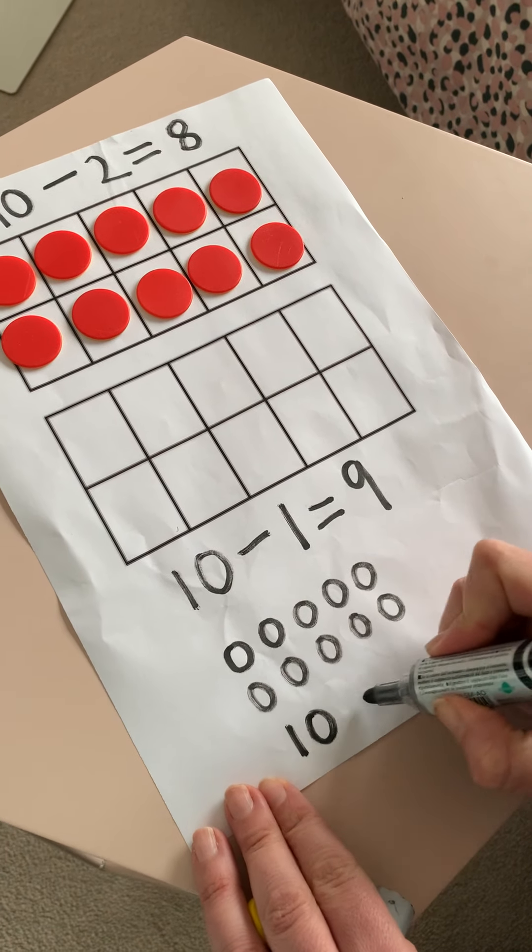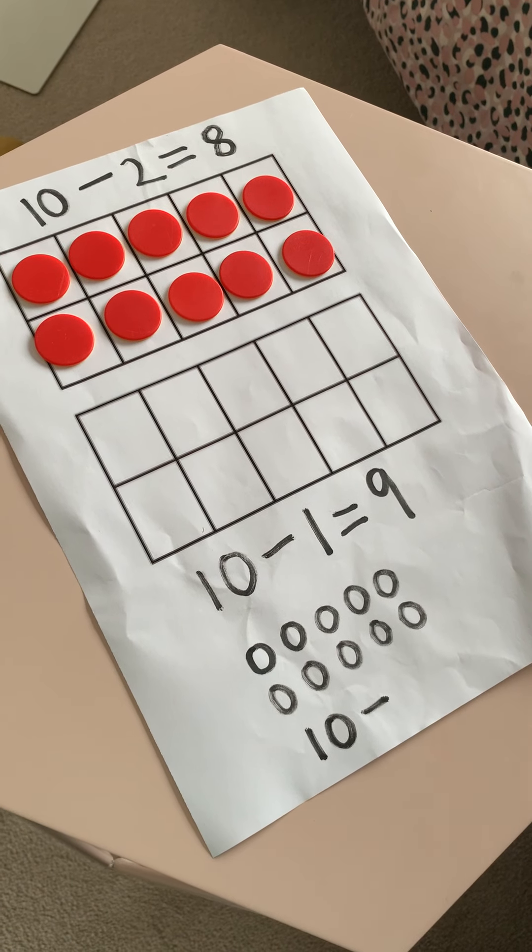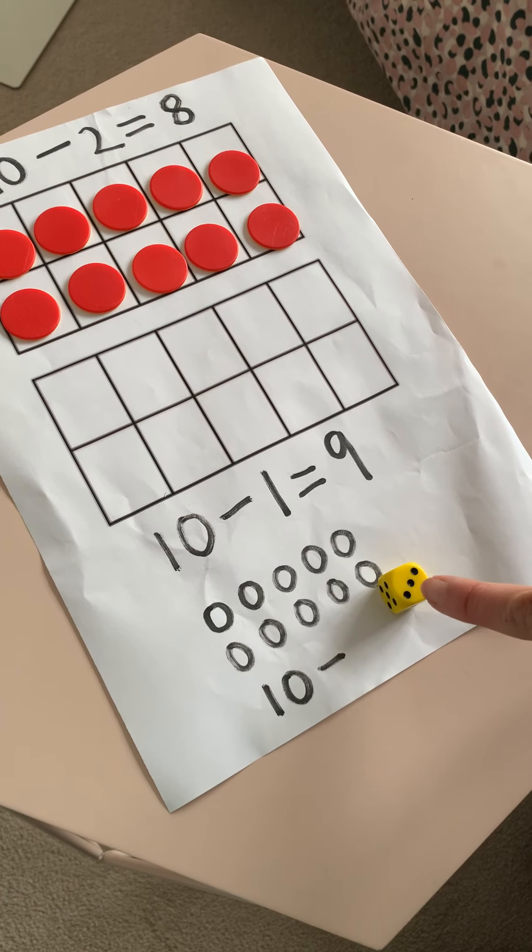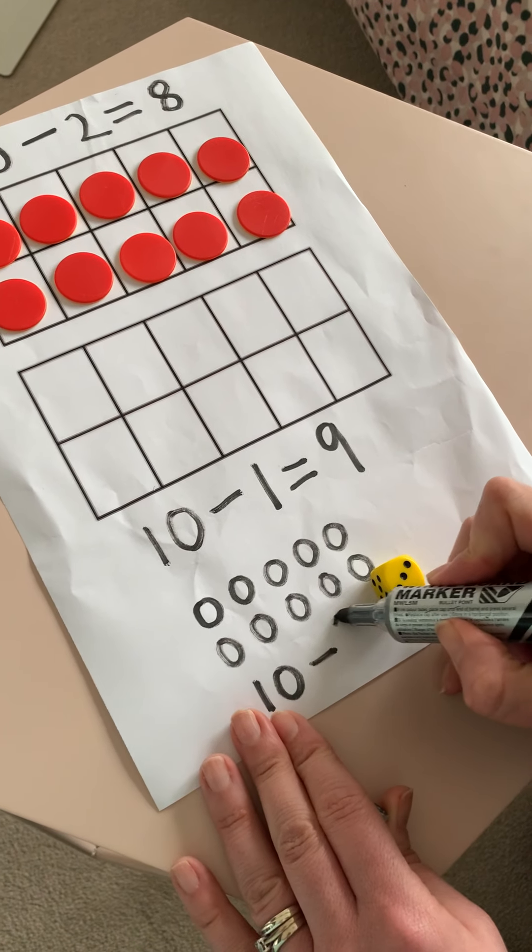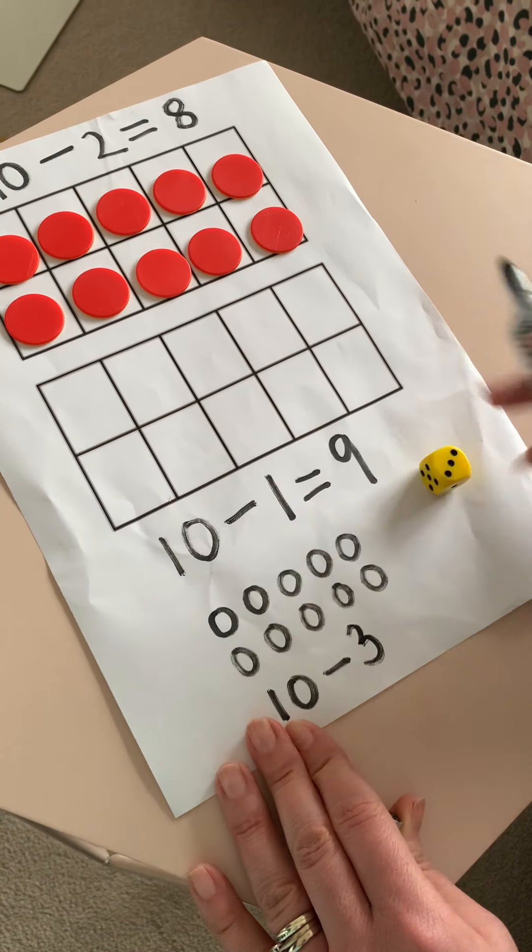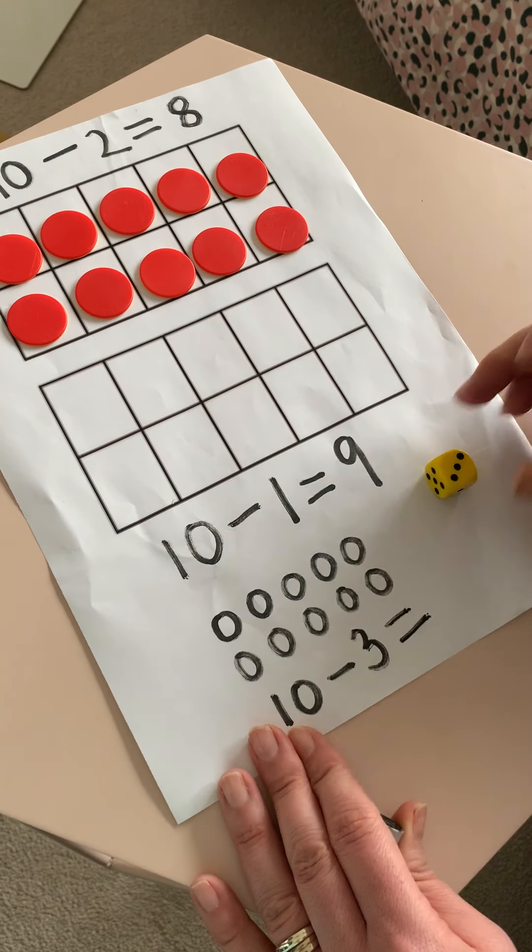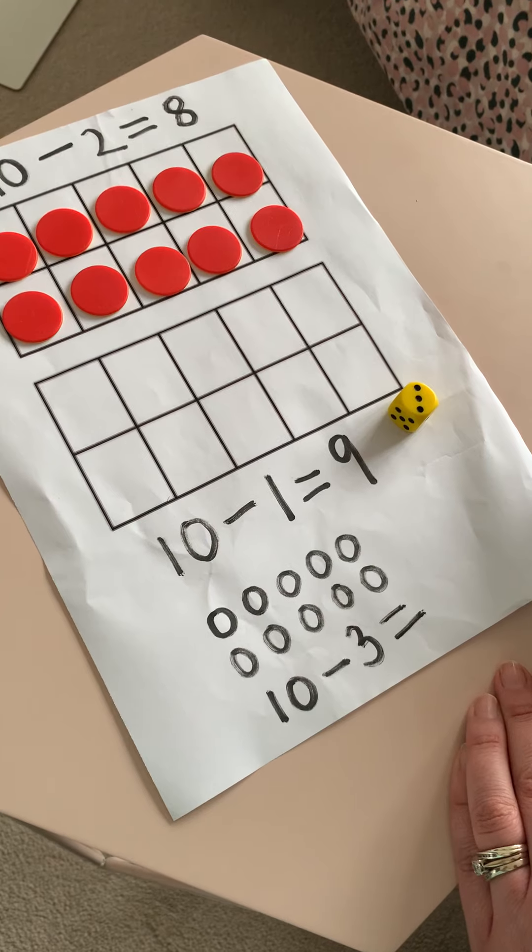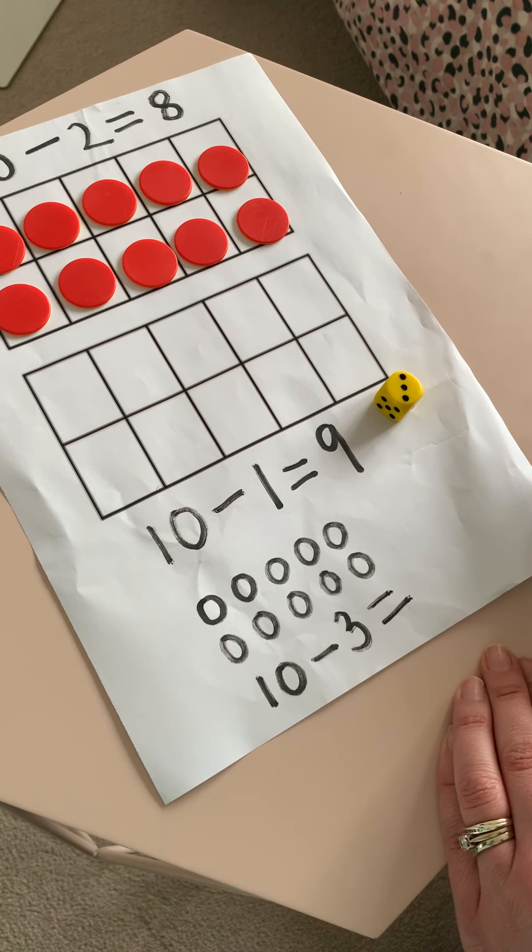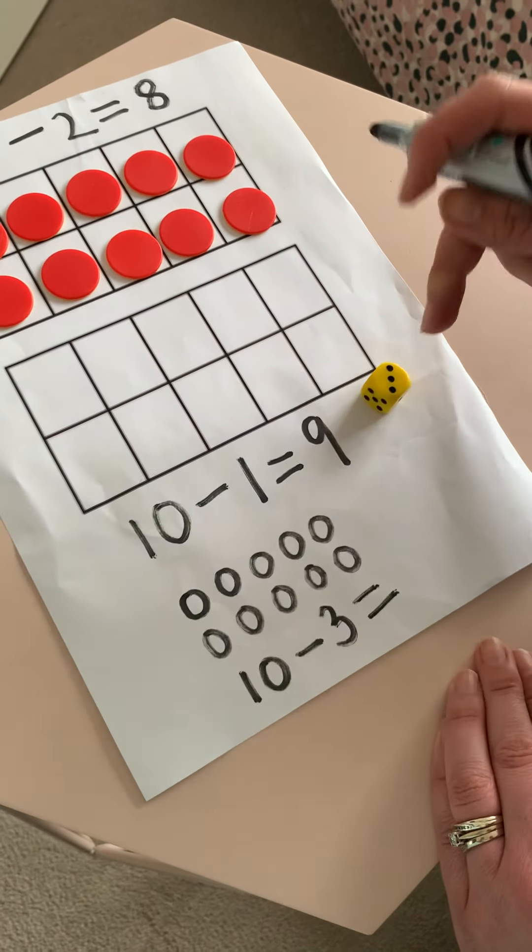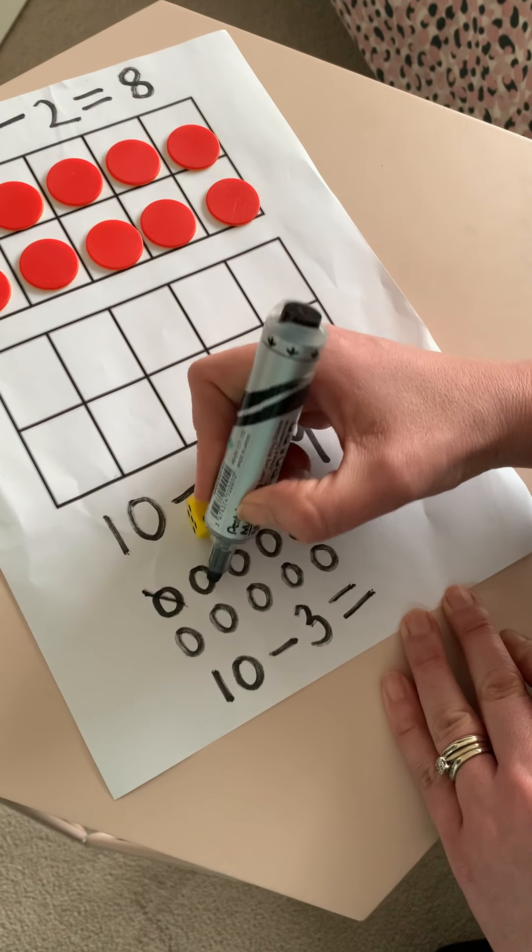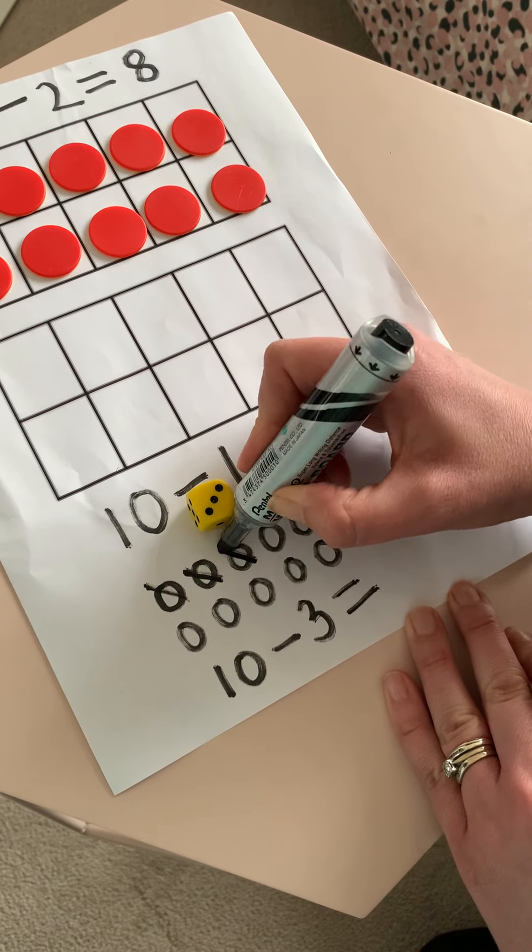10, take away. Let's see how many we're going to take away. Oh, that's right. We're going to take away 1, 2, 3. Take away 3. I'm going to find what that equals. Now I can't take my drawings away. So what I'm going to do instead is I'm going to draw a line on the ones I have taken away. So I'm going to count 3 that I'm going to take away. 1, 2, 3.